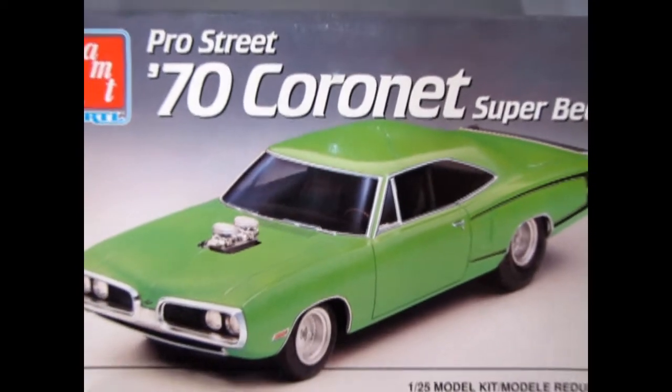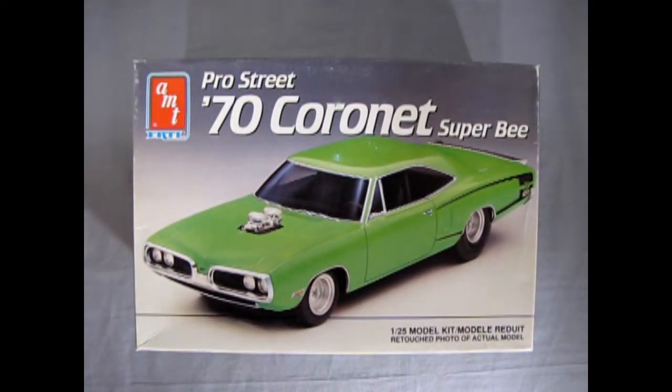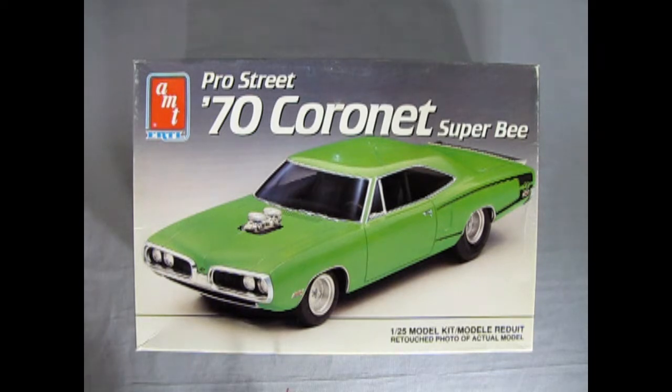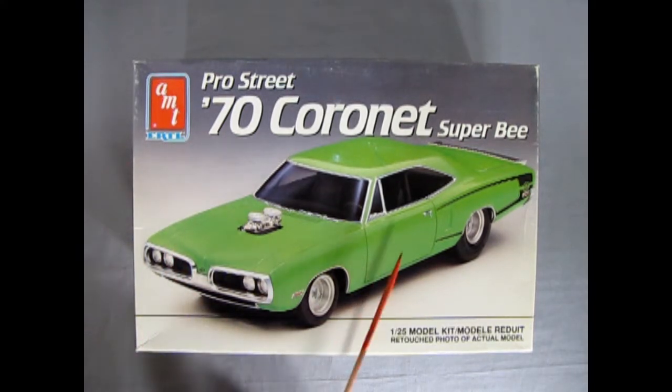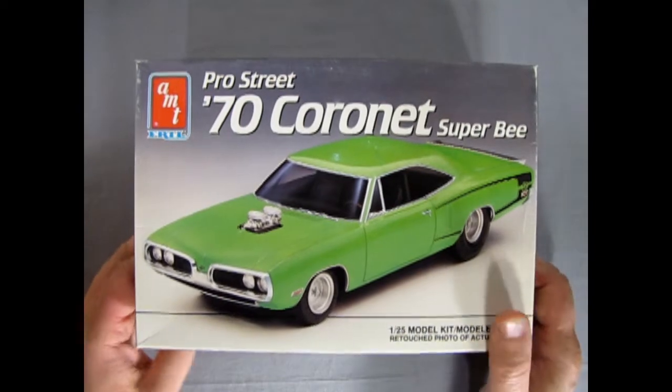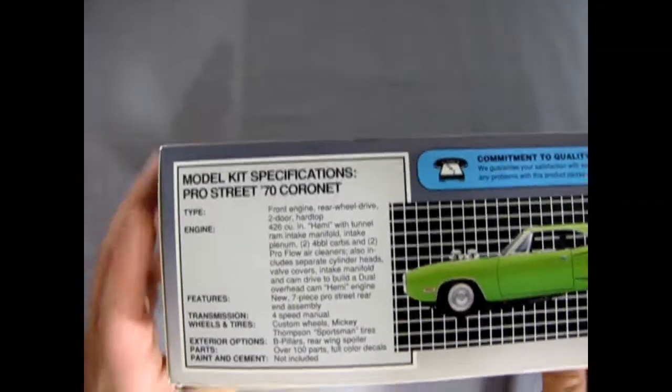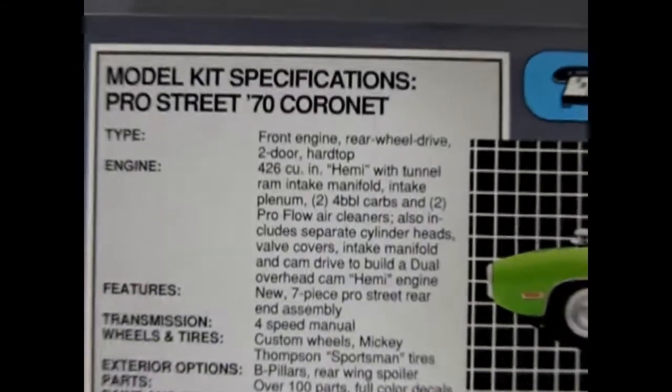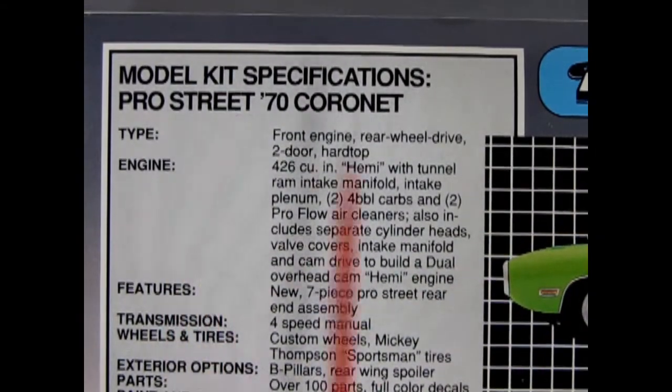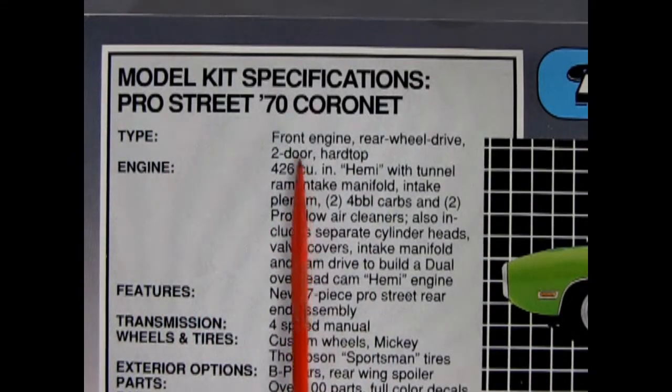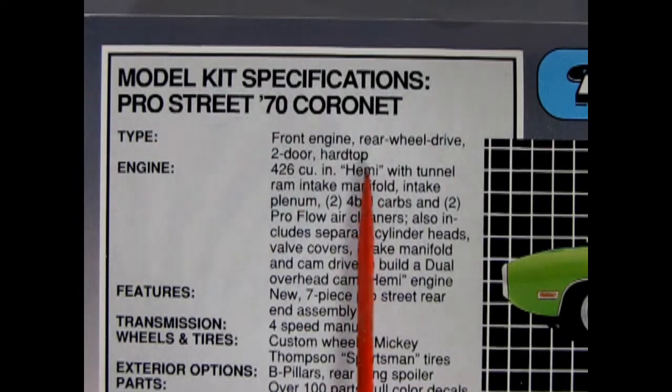Here's a far-out street racer that's sure to get you in Dutch with the man. I of course am talking about the Pro Street 1970 Coronet Super B by AMT Ertl. Man, can you dig this cool groovy ride. Here's the skinny, the dirty lowdown. This model kit is made by AMT Ertl and came out in 1992 to compete with the likes of Tamiya Japan for most bodacious model. Alright let's flip this thing up and get the skinny on it. So right here, if we zoom in, you can see the model kit specifications for the Pro Street 70 Coronet. The type is a front engine rear wheel drive two-door hardtop. Can you dig it?